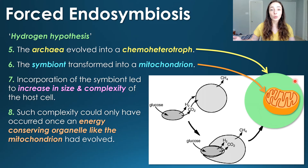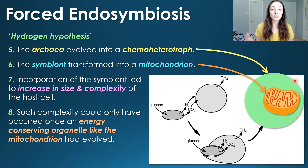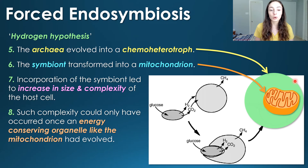Such complexity would have required a mitochondrion — an energy-creating and conserving organelle. As you may know from any biology class, the mitochondrion is the powerhouse of the cell, something bacteria and archaea don't have. When it evolved, it was a game changer: they could now do so many more things, become more complex and larger.